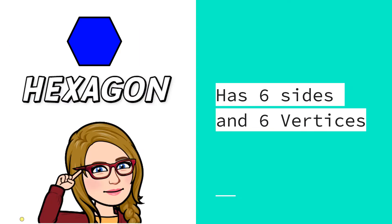Now let's talk about the hexagon. The hexagon has six sides and six vertices. I like to remember this shape is called a hexagon because the number six, when spelled out, has the letter X in it. Also, the word hexagon has the letter X in it, so it's easy to remember that a hexagon has six sides and six vertices.